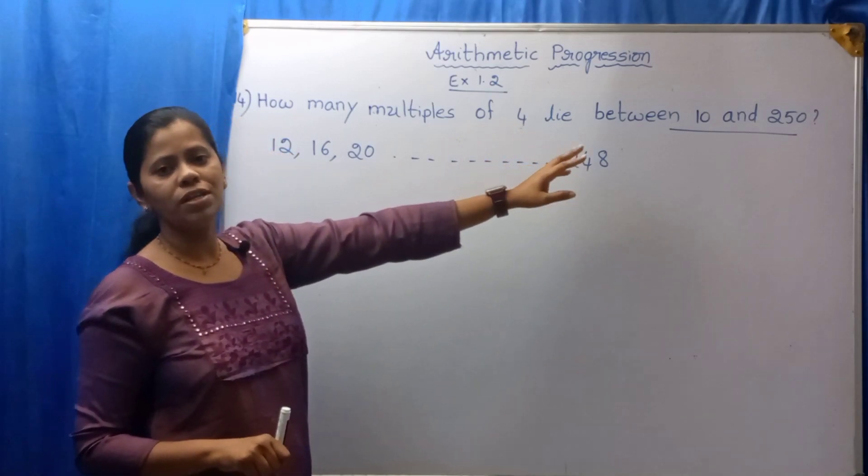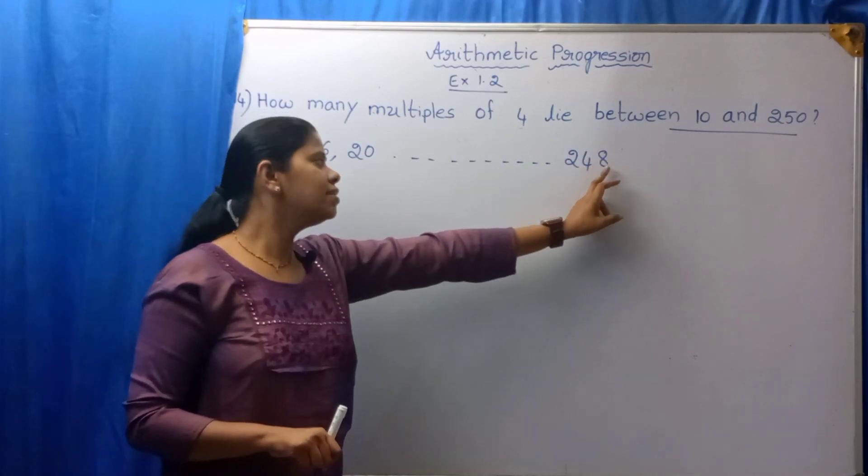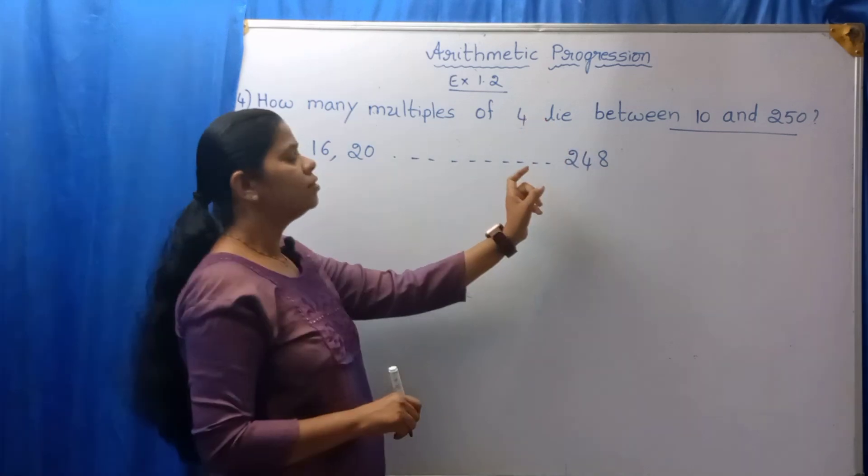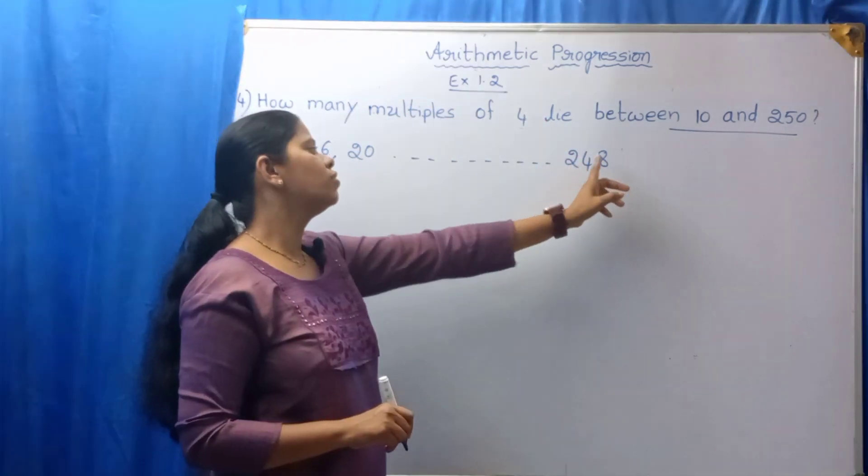249 is not the multiple of 4. The last number is 248 and it is the multiple of 4. That is, 4 times 62 equals 248.